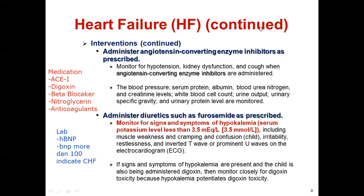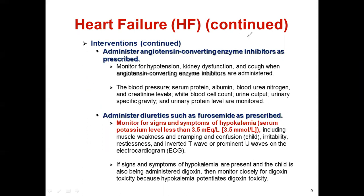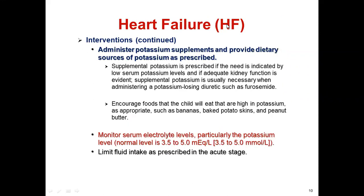Administer potassium supplements and provide dietary sources of potassium as prescribed. Supplemental potassium is indicated by low serum potassium levels. Encourage foods high in potassium. Monitor serum electrolyte levels, particularly potassium — normal range is 3.5 to 5.0 mEq/L. Less than 3.5 is hypokalemia; greater than 5.0 is hyperkalemia. Both are dangerous and can lead to dysrhythmia, and dysrhythmia can lead to cardiac arrest. Limit fluid intake as prescribed in acute states.